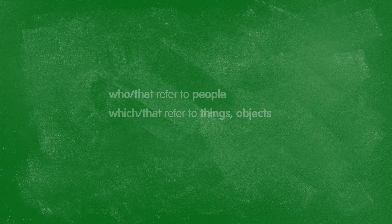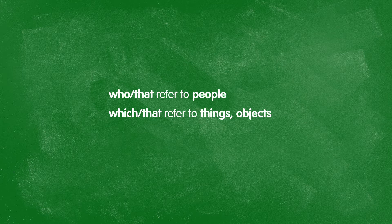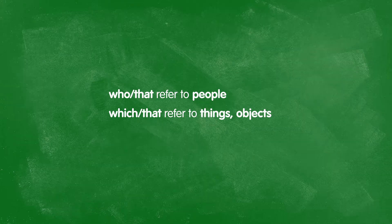Note that the relative pronouns 'who' and 'that' refer to people, and 'which' and 'that' refer to things or objects. 'That' can be used to refer to people or to things — don't let that confuse you.